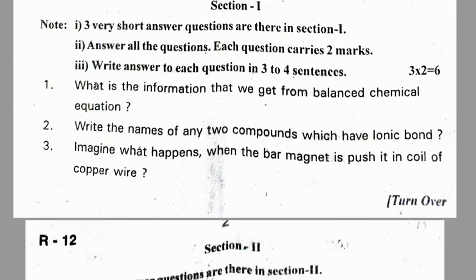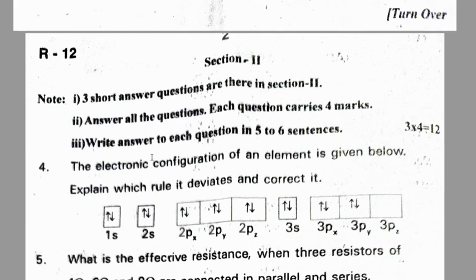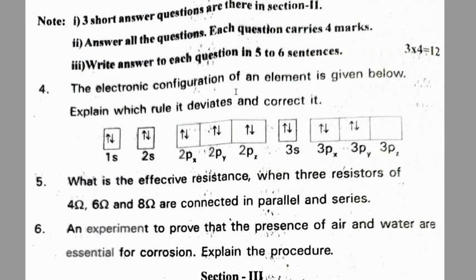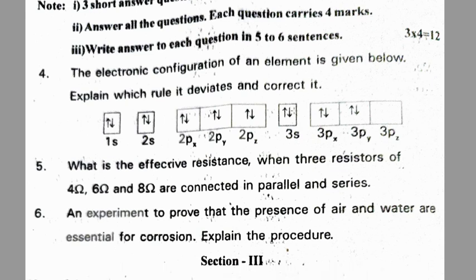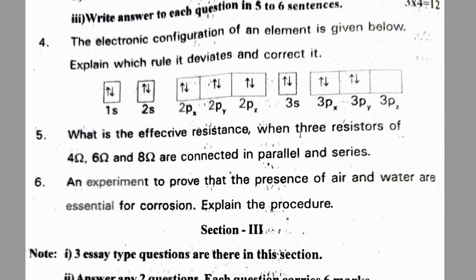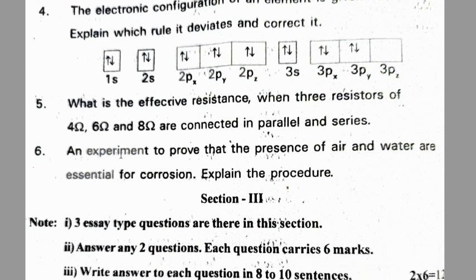Rangareddy district pre-final 1: What information do we get from a balanced chemical equation? Write the names of any two compounds which have ionic bonds. Imagine what happens when a bar magnet is pushed into a coil of copper wire. Section 2: the electronic configuration of an element is given — explain which rule it deviates from and correct it. What is the effective resistance when three resistors of 4, 6, and 8 ohms are connected in parallel and series? An experiment to prove that presence of air and water are essential for corrosion — explain the procedure.